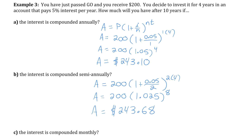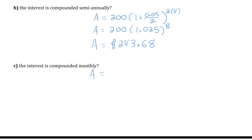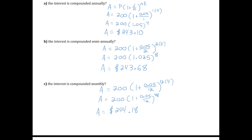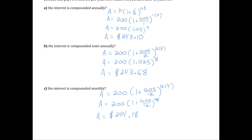Let's see what happens if we compound the interest monthly. The future amount equals 200 times 1 plus 0.05 divided by 12, to the exponent of 12 times 4 — simplifying the exponent to 48. We're getting interest 48 times, but each time it's only a twelfth of 5%. Because you're getting it more times, you earn more interest on top of interest, netting a larger amount: $244.18. Because the initial investment was only $200, the differences look small, but with a higher initial investment the differences between compounding frequencies would be much larger.